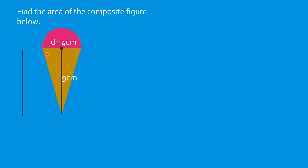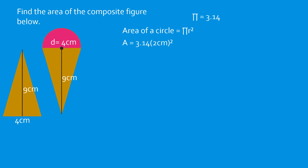Now look at this figure — it has a triangle and half of a circle. The given for the circle is the diameter of 4 centimeters, so the radius is 2 centimeters. The triangle has a height of 9 centimeters and a base of 4 centimeters, which is also the diameter. First, let's get the area of the full circle: pi r squared equals 3.14 times 2 squared equals 3.14 times 4 equals 12.56 square centimeters.